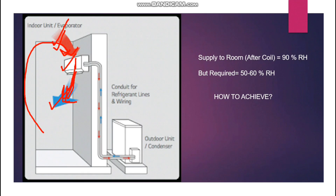Normally after the coil, the off-coil relative humidity will be 90–95%, almost near to the saturation stage. But for the comfort condition in the room, we need the RH to be 50–60%. So the coil air comes out with a very high relative humidity of 90–95%, but we need 50–60% RH in the room. We will see how to understand this properly in the HVAC system.